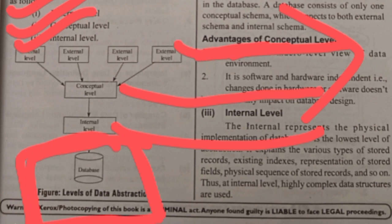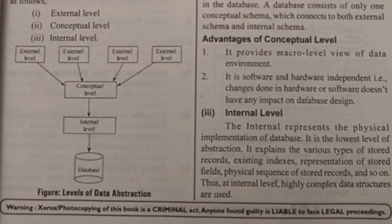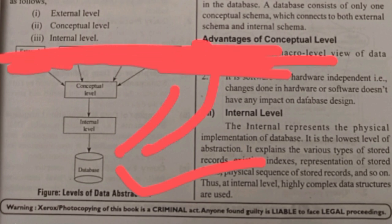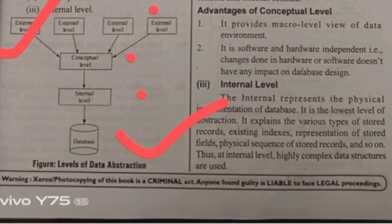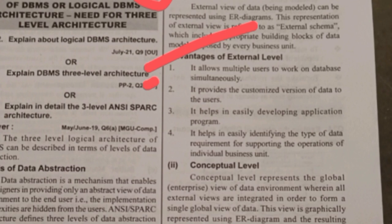For example, Osmania University — when results are out, you will check your results using your hall ticket number. By entering your hall ticket number only, it will show your results. It will not show your friend's results without entering your number. That is called the external level. The advantage of external level is it allows multiple persons to access the database at the same time — many thousands of students check their results at one time.